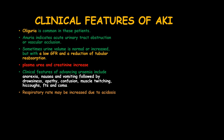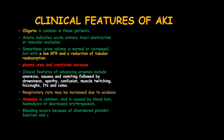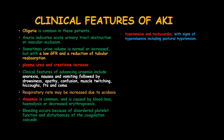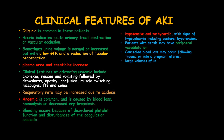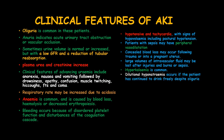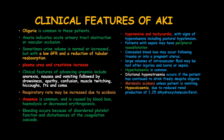Respiratory rate may be increased due to acidosis, and anemia is common due to inhibition of erythropoietin production or blood loss due to hemolysis. Bleeding occurs because of disordered platelet function and disturbances of the coagulation cascade. Hypotension and tachycardia with postural hypotension can be present. Large volumes of intravascular fluid may be lost after injuries, burns, or sepsis. Hyperkalaemia is common, and dilutional hyponatremia occurs if the patient has continued to drink during oliguria. Metabolic acidosis is present unless the patient is vomiting. Hypocalcemia occurs due to reduced renal production of 1,25-dihydroxycholecalciferol.